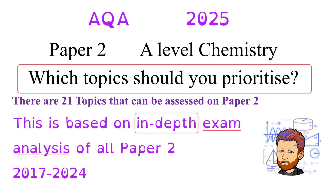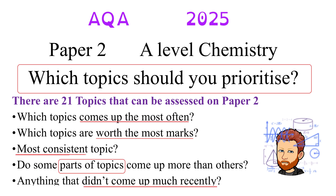Hello and welcome to this A-Level Chemistry video where I'm going to help you prioritize your revision for the Paper 2 exam for AQA Chemistry. There are 21 different topics that you can be assessed on in Paper 2, and I've done an in-depth exam analysis of all of the Paper 2s to help you find out which topics come up most often, which are worth the most marks, and which parts of topics come up more than others.